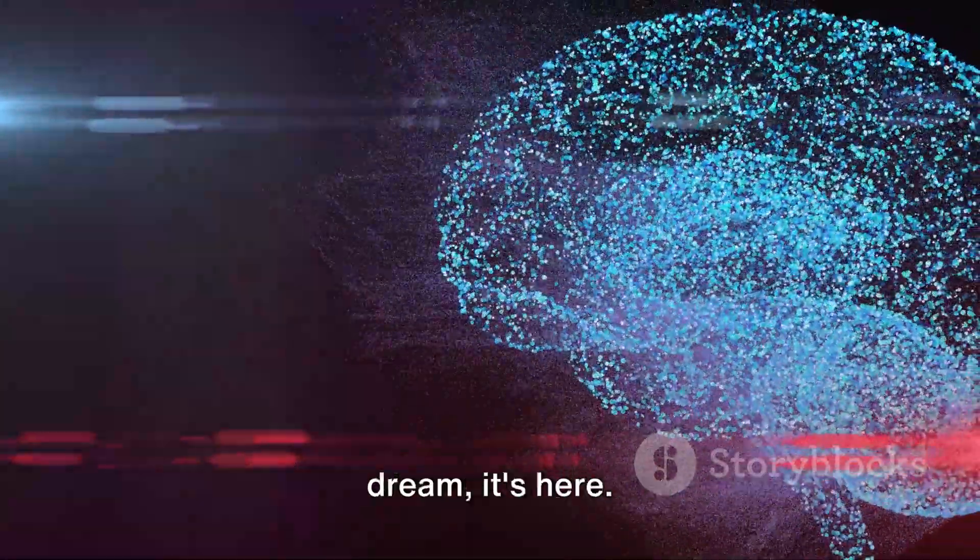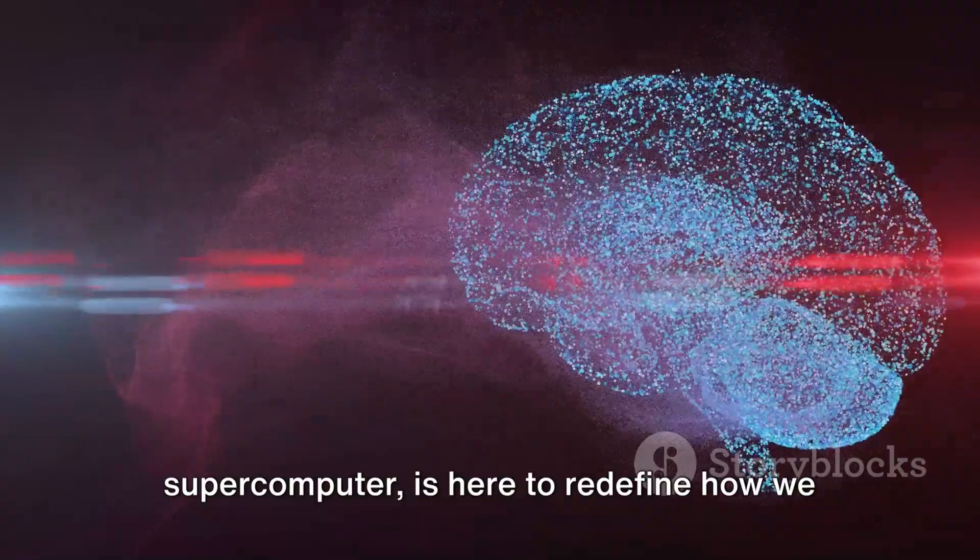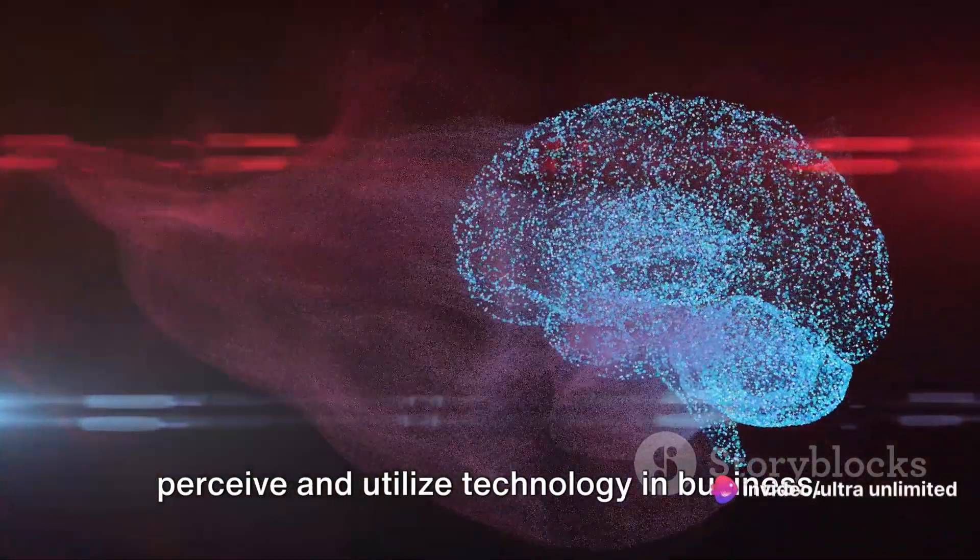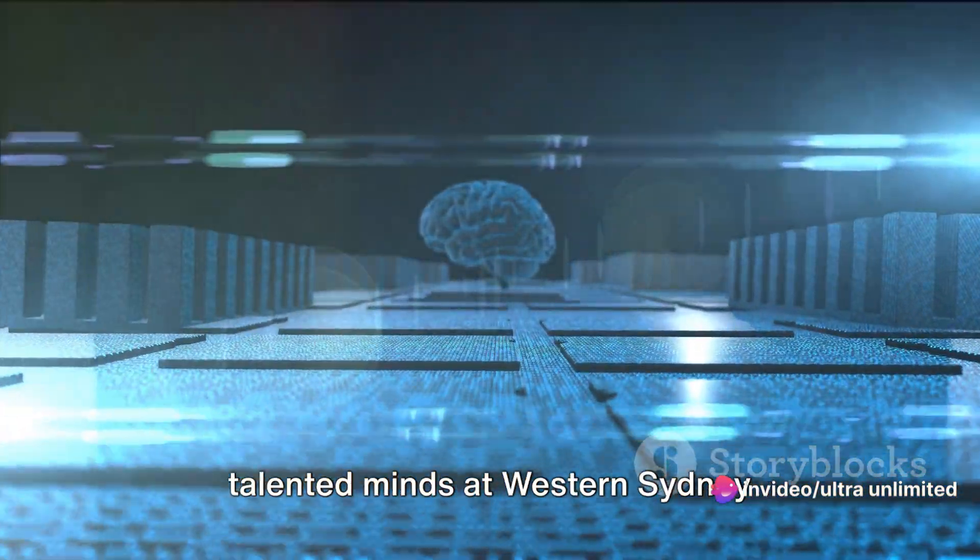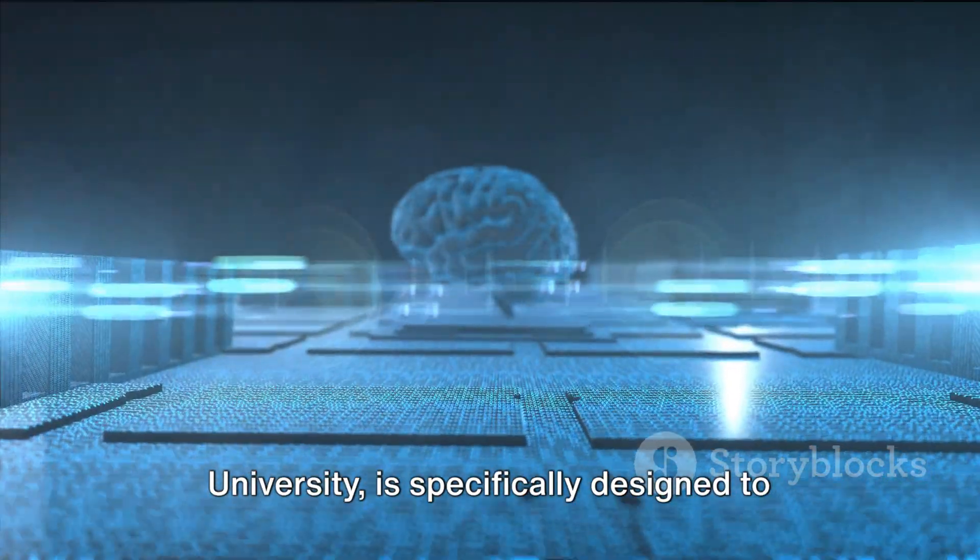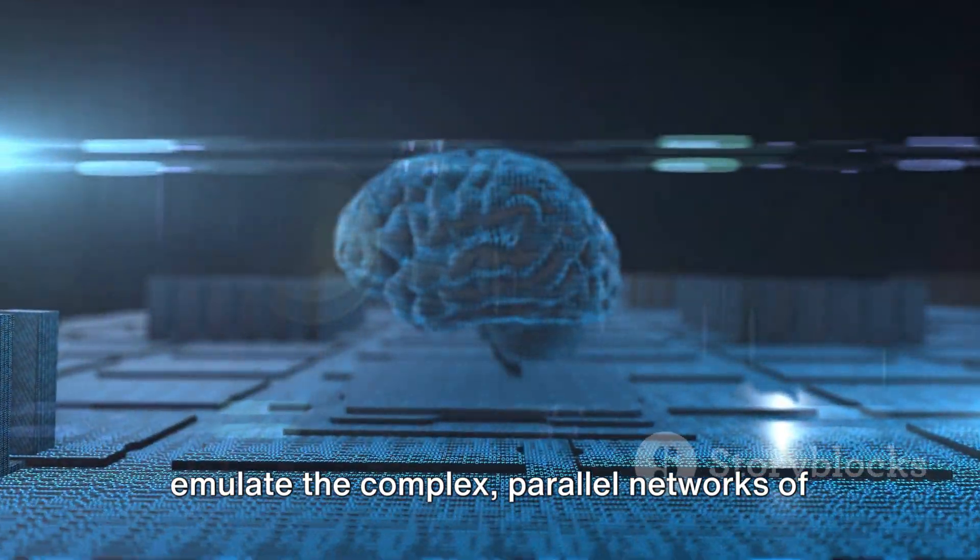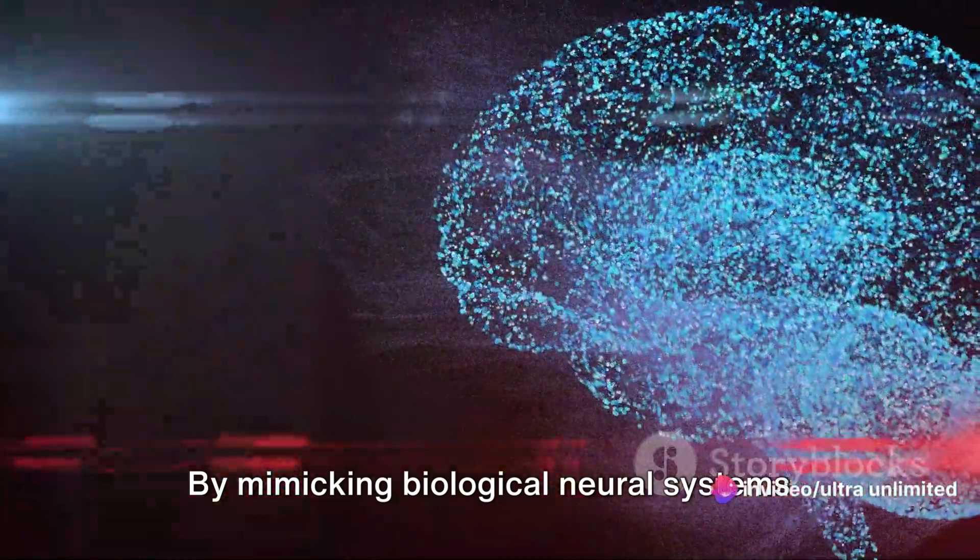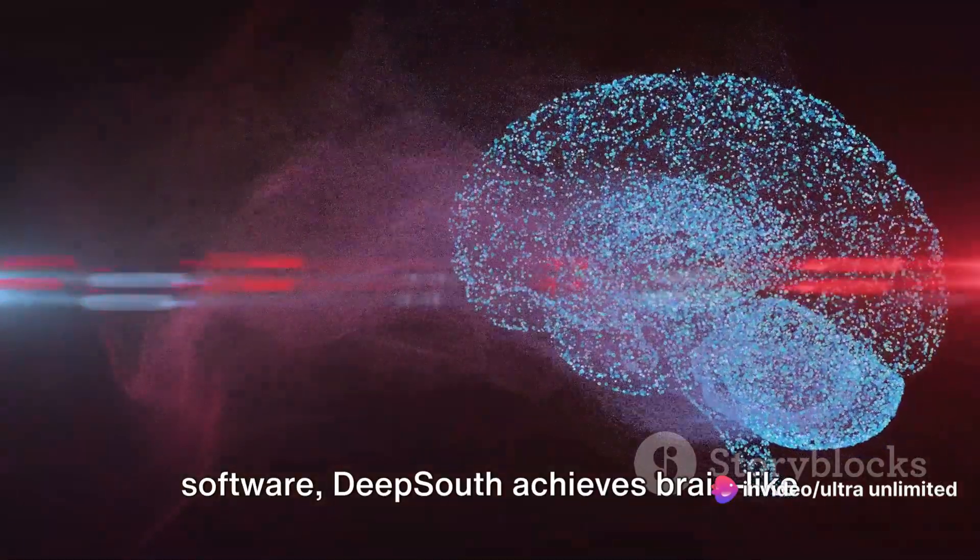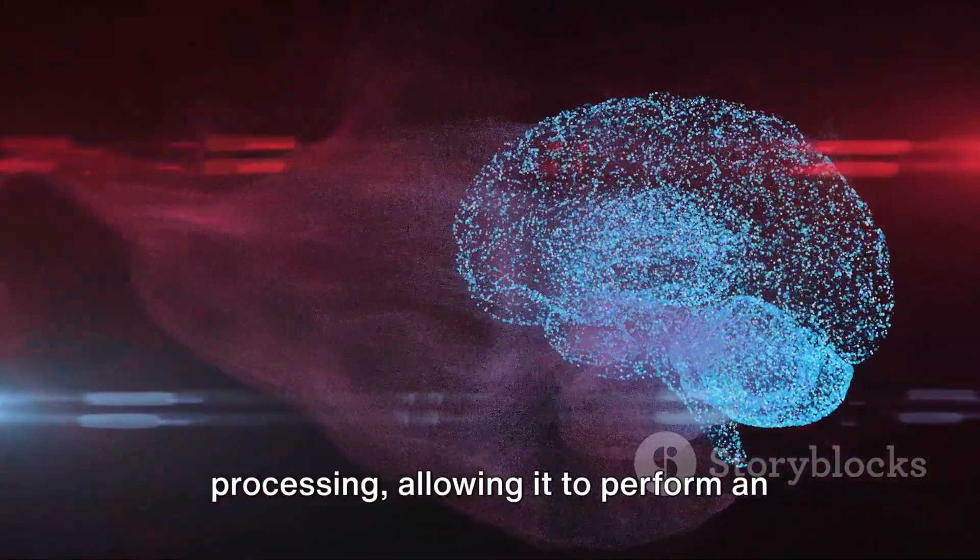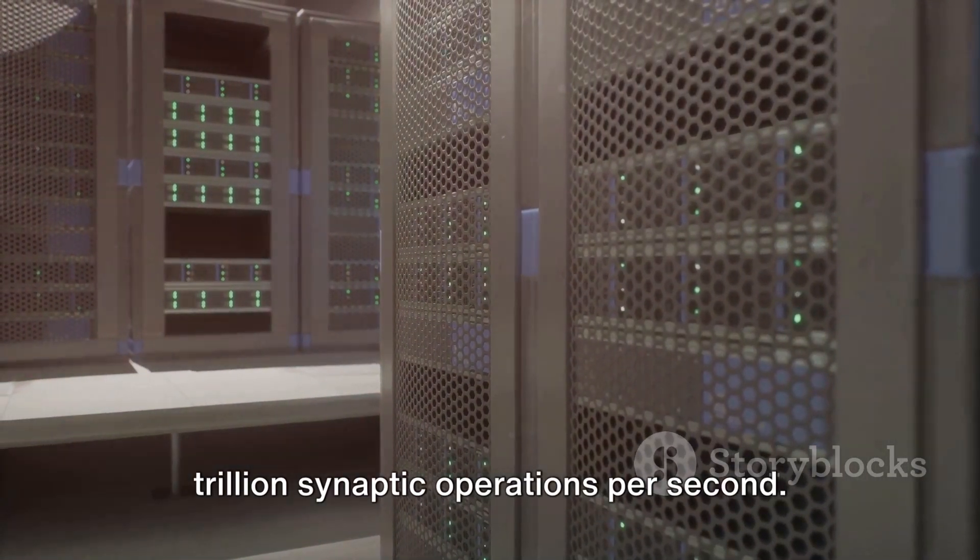The future of computing is not a distant dream, it's here. Deep South, the world's first neuromorphic supercomputer is here to redefine how we perceive and utilize technology in business. This innovative system, pioneered by the talented minds at Western Sydney University, is specifically designed to emulate the complex parallel networks of the human brain. By mimicking biological neural systems using bespoke neuromorphic hardware and software, Deep South achieves brain-like processing, allowing it to perform an astounding 228 trillion synaptic operations per second.